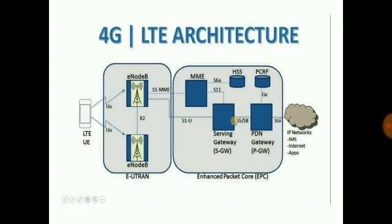The eNodeB is a part of the evolved UMTS terrestrial radio access network and it allows user equipment to connect to the LTE network. An eNodeB typically communicates with user equipment and other eNodeBs, and the evolved packet core through various interfaces: UU interface, X2 interface, and S1 interface. The main functions of eNodeB are radio resource management, routing of user plane packets towards the serving gateway, MME selection, packet compression and ciphering, and message scheduling and transmission.